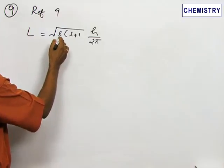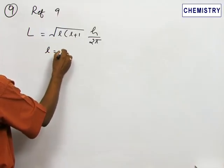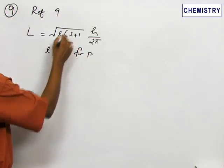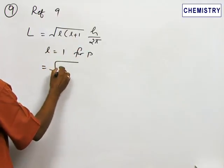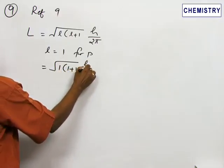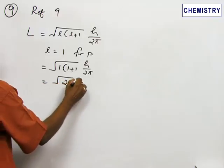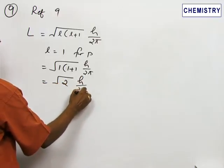For P orbital L takes the value 1. If you substitute root 1 into 1 plus 1 H by 2π, therefore root 2 H by 2π.